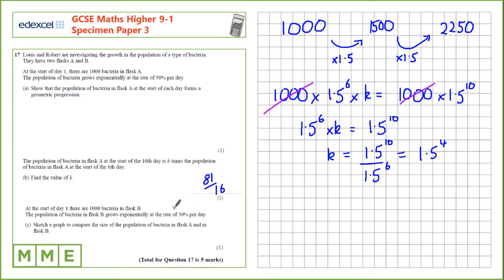At the start of day one there are a thousand bacteria in flask B. The population of bacteria in flask B grows exponentially at the rate of 30% per day. Sketch a graph to compare the size of population of bacteria in flask A and in B.